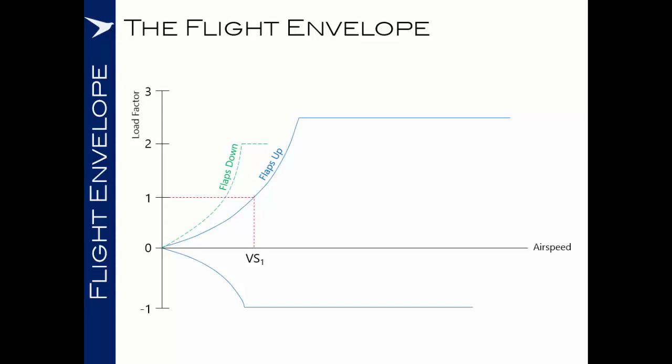The speed at which our maximum control deflection will result in an overstress of the aircraft, exceeding the maximum permissible load factor, we refer to as VA or the maneuvering speed.